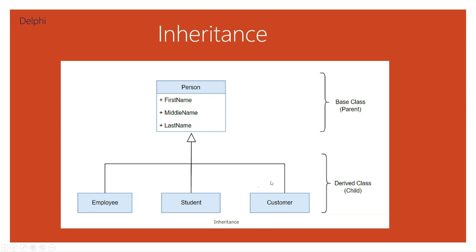Here is a graph showing the Person class with first name, middle name, and last name — this is the base class or parent class. From this Person class, we can derive the Employee, Student, and Customer classes. These are called the child classes or derived classes.